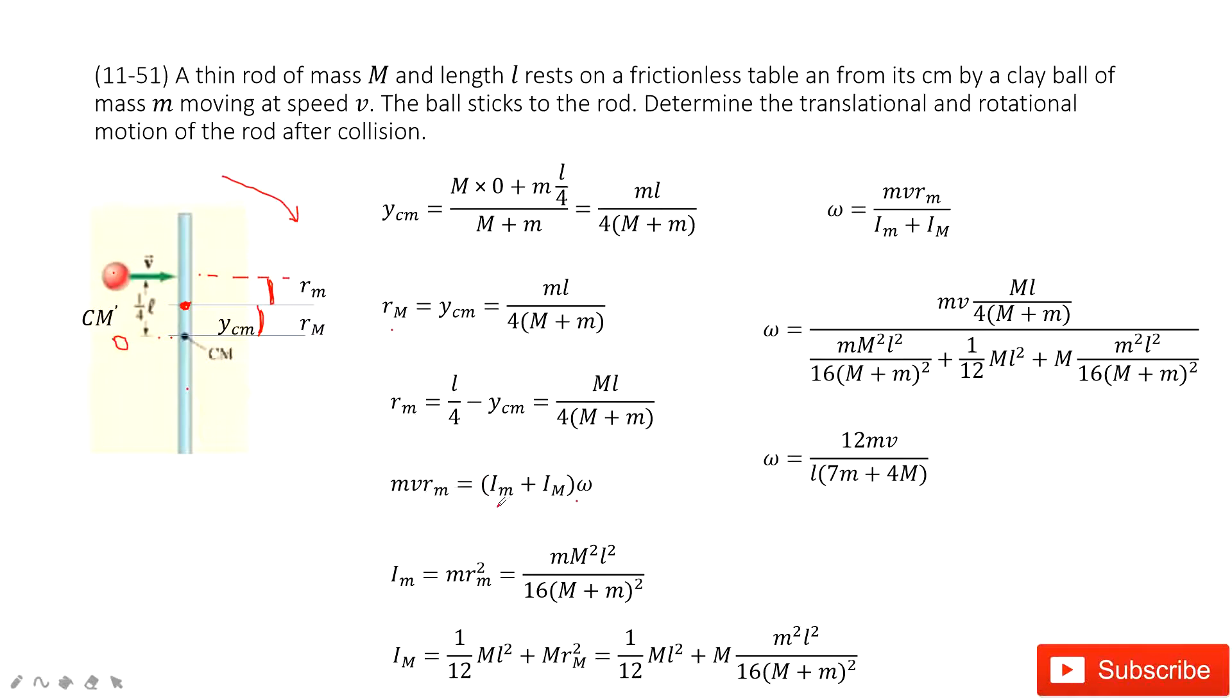We need to find I_m. This one is the moment of inertia for the clay: mass times r_m squared. This is the rotation axis there.